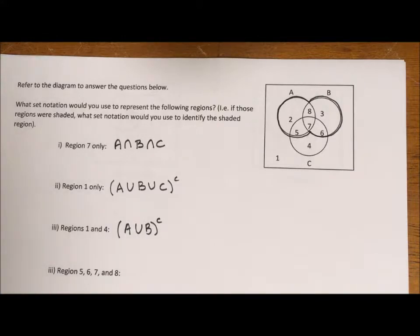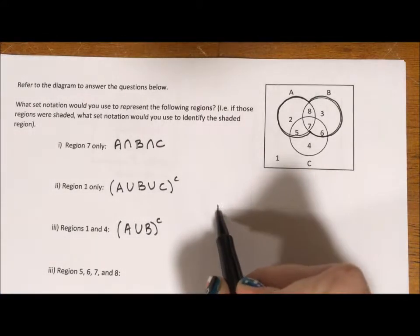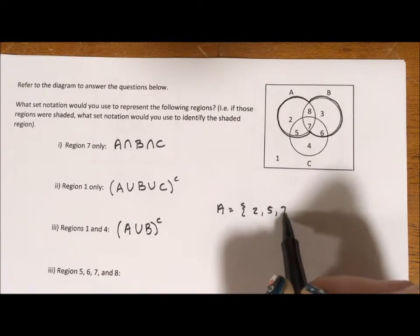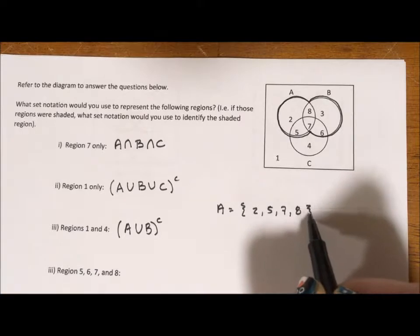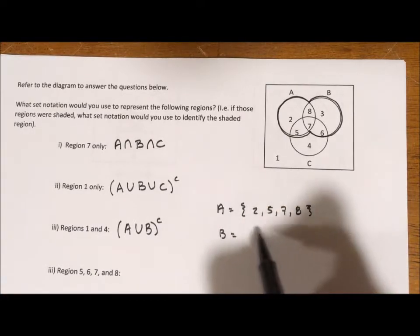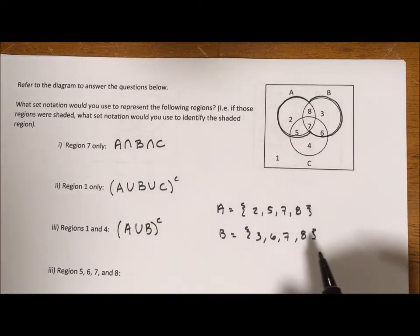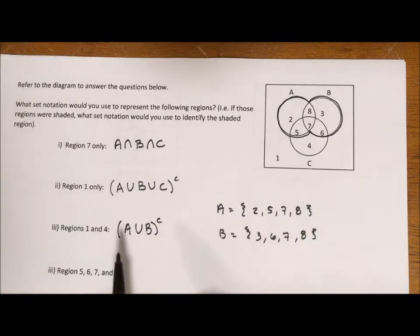Now there's another way I could have done this. If we say A is equal to regions 2, 5, 7, and 8 and we say B is equal to regions 3, 6, 7, and 8.